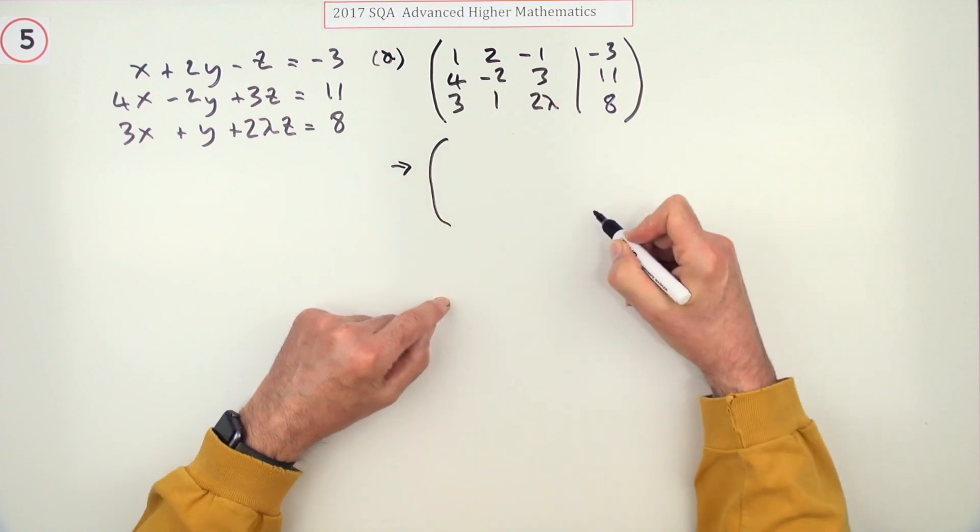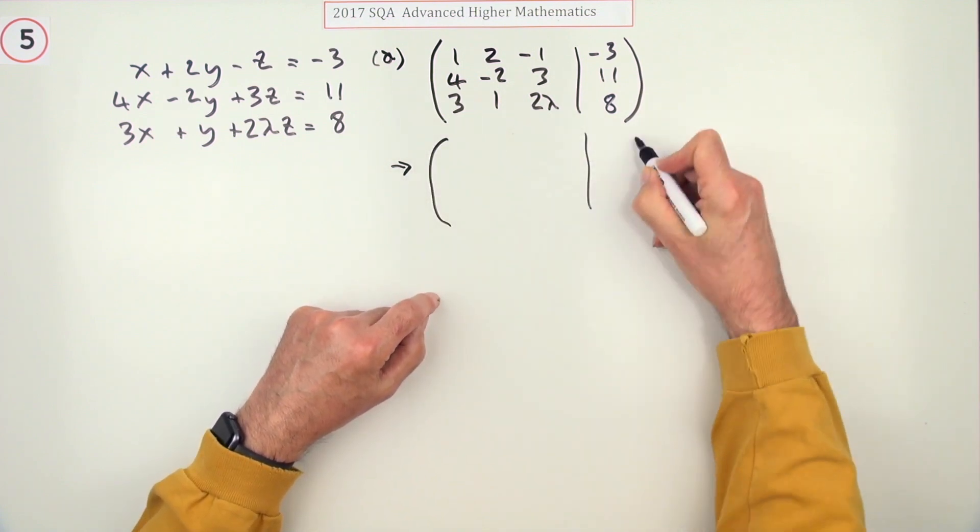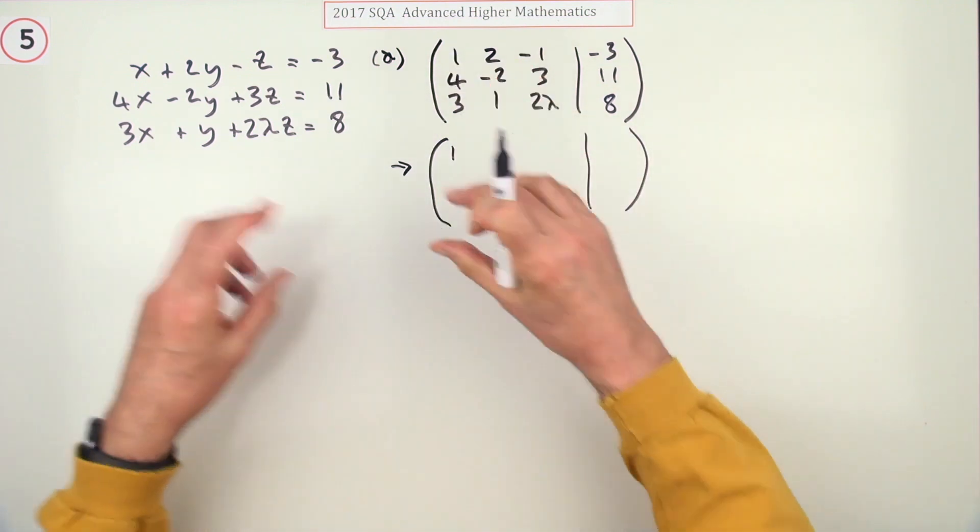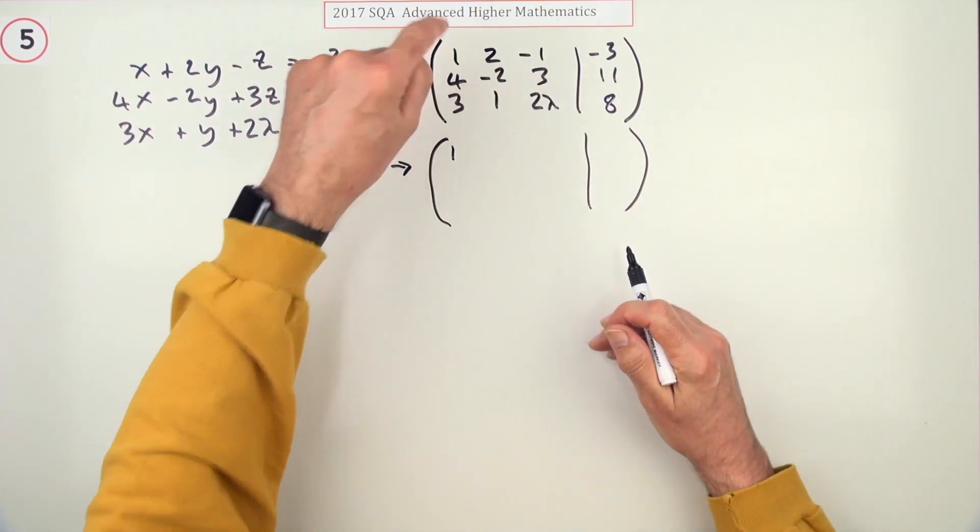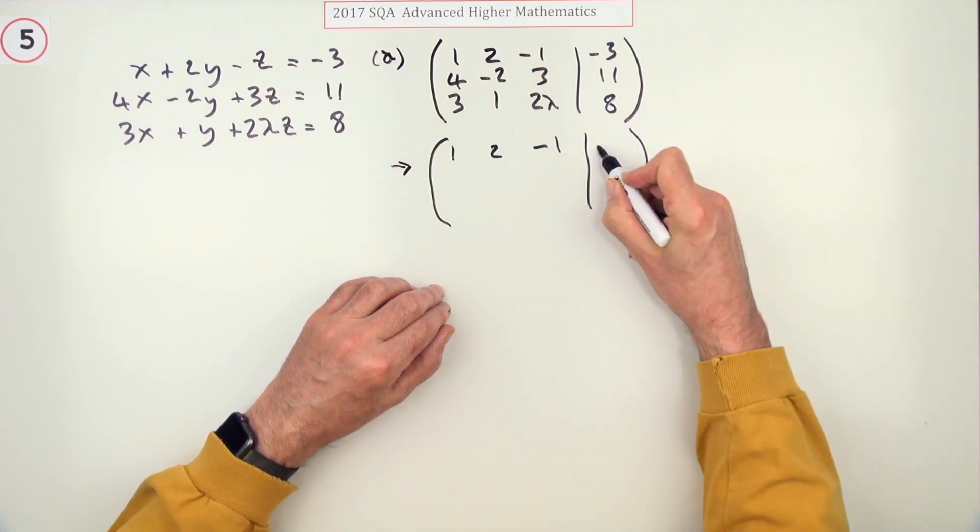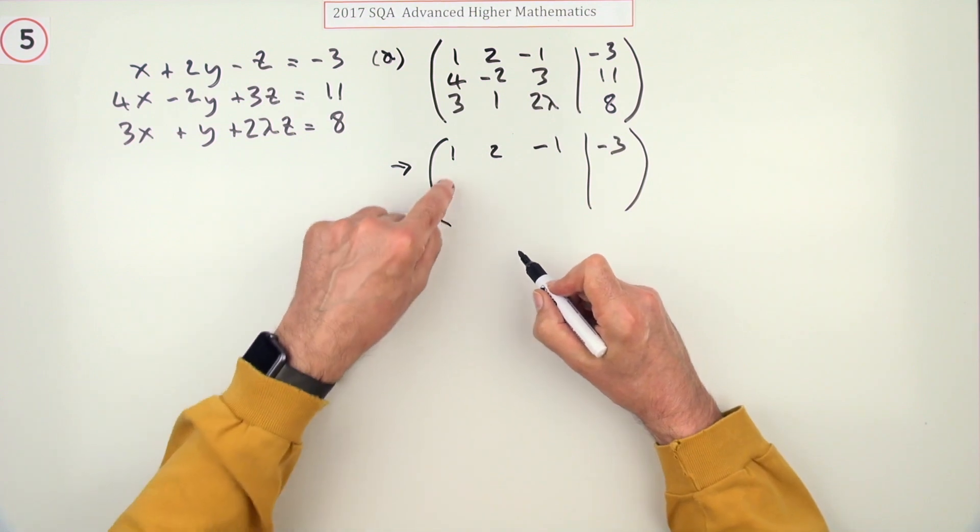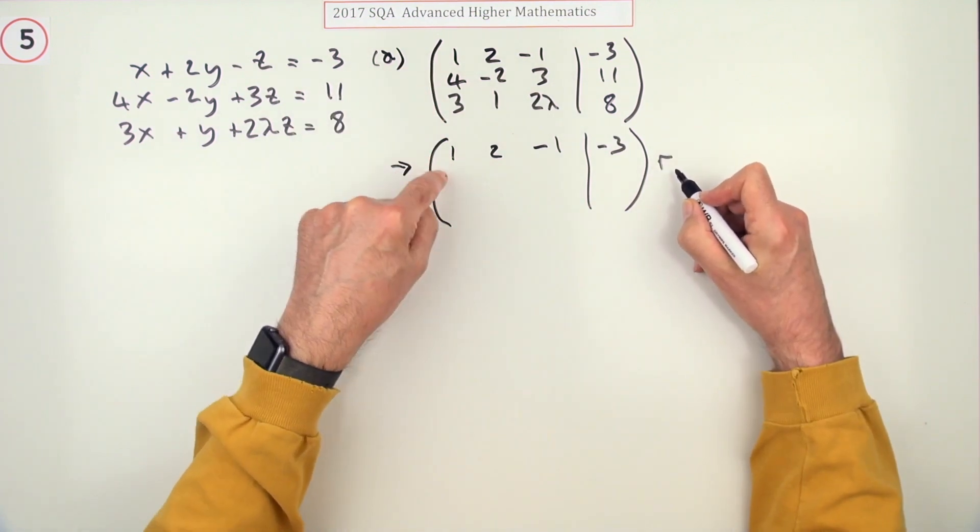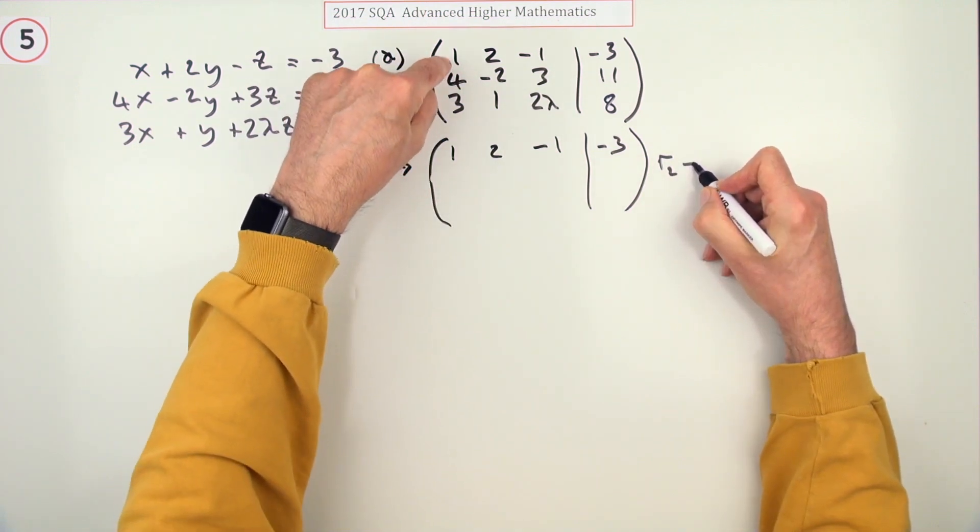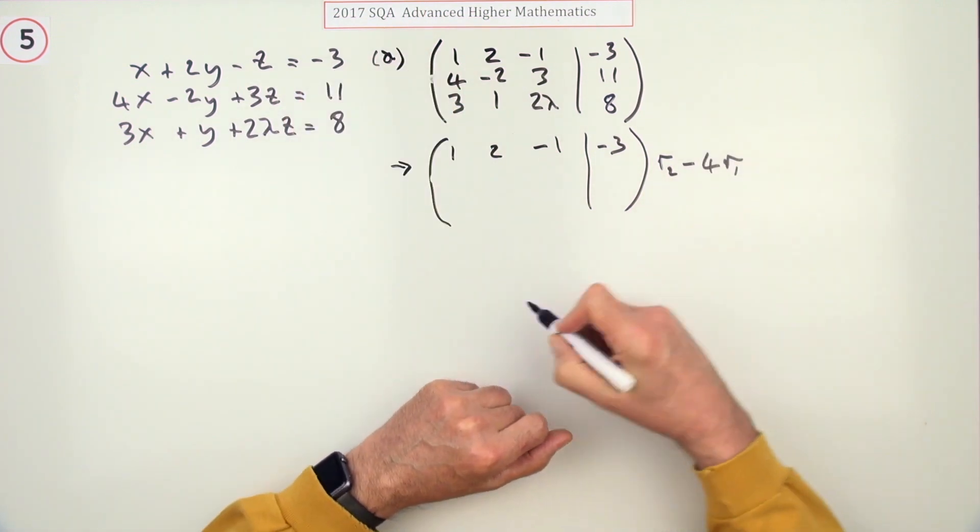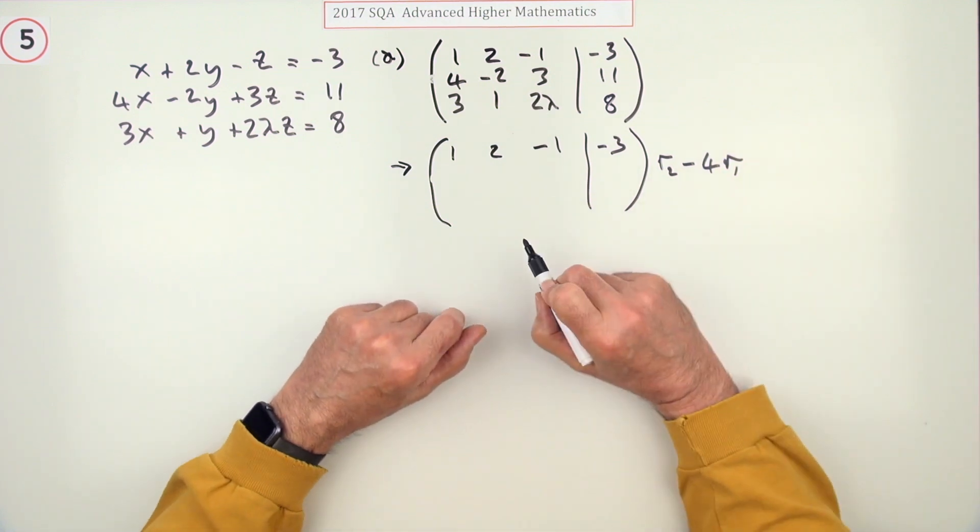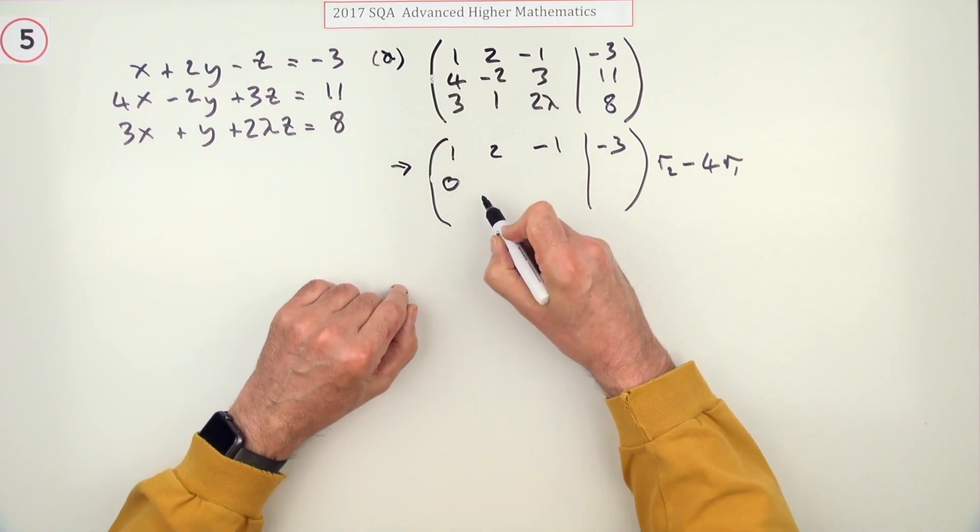Right, what can that be transformed into with elementary row operations? Well it's already got the one on top. If that hadn't been there I'd have reshuffled my equations to put the one on top. Now to get this to a zero I'm going to take row 2 and take away four lots of row 1. I know it should really say row 2 goes to row 2 minus 4 row 1 but I'll just put that down. So that means I've got 4 take away 4 is 0.